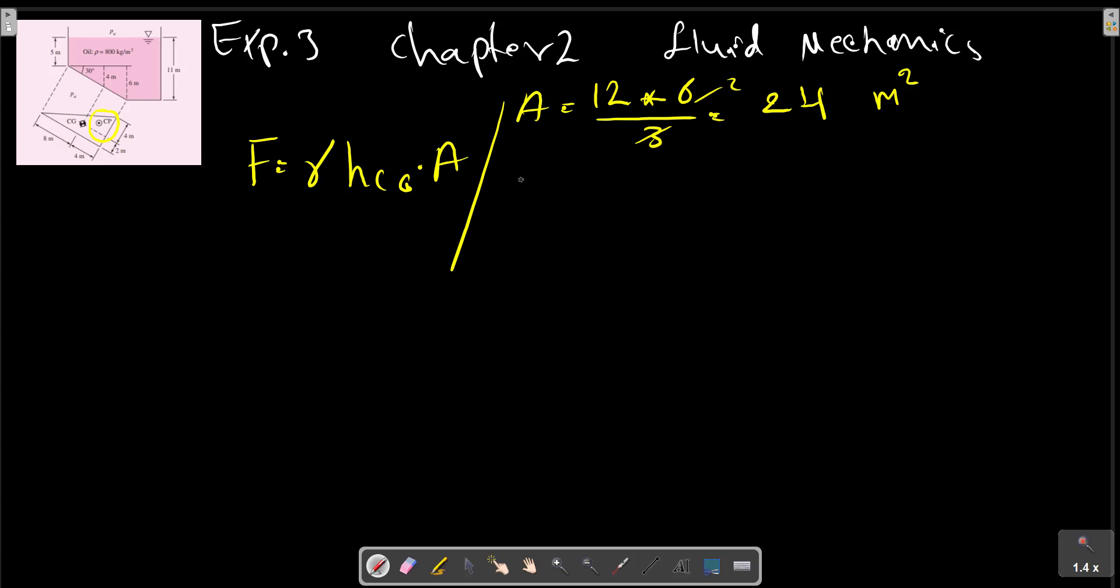That's 3.8 meters squared, and HCG equals 2. We can calculate this point. For a triangular shape, the CG, for example, is in the edge at 1/3 from the bottom of the triangle.